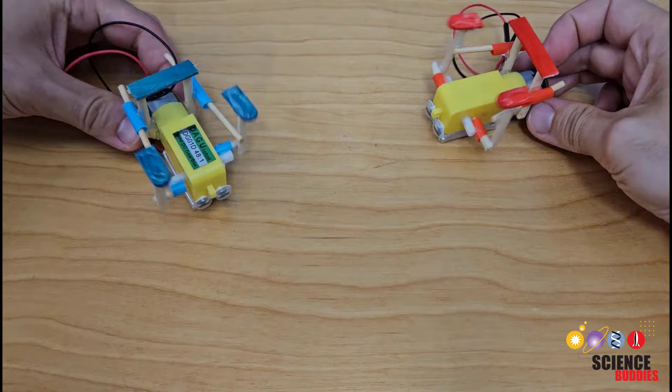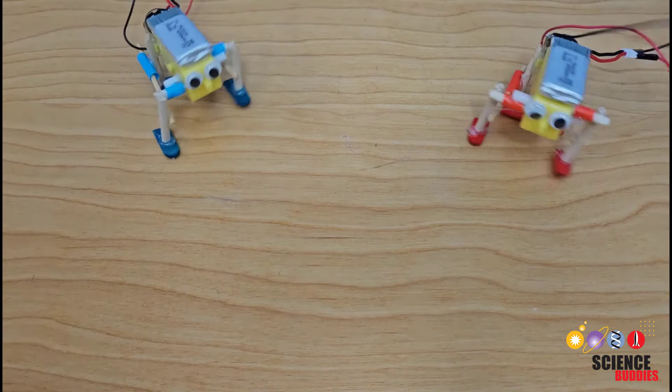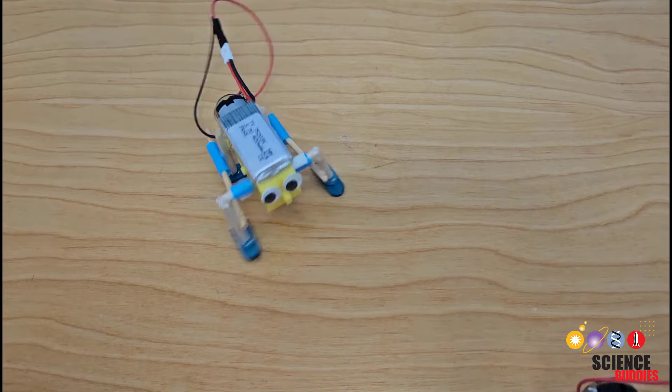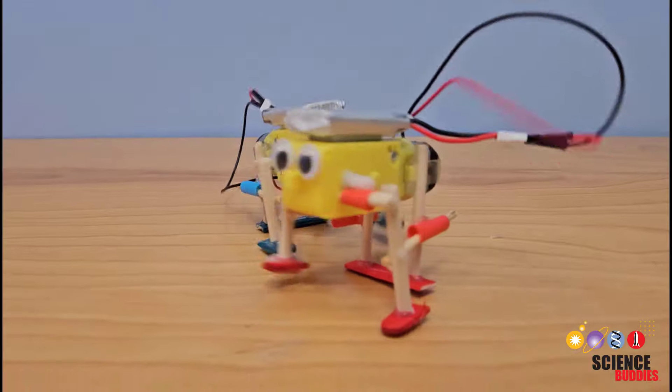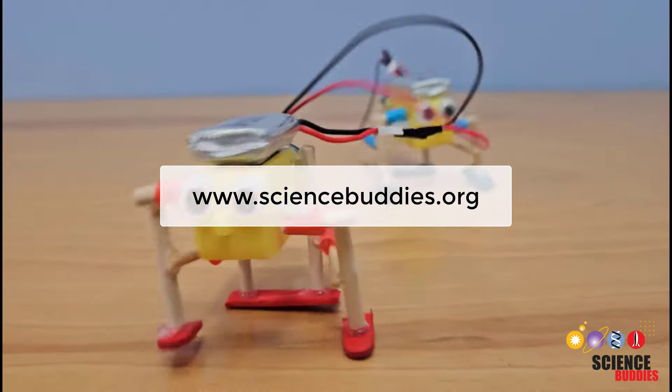For a science project, you can try changing the dimensions, materials, or power supply of your robot to see if you can make it faster. For written instructions for this and over a thousand other science and engineering projects, check out the links in the video description or visit our website www.sciencebuddies.org.